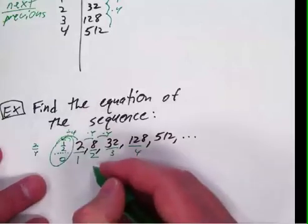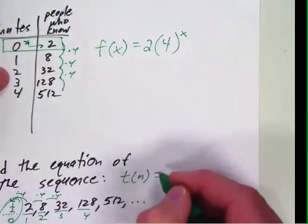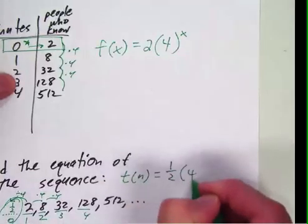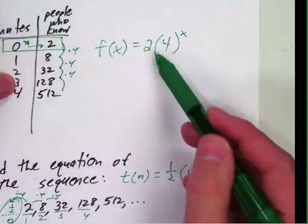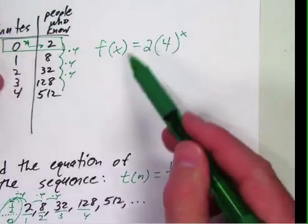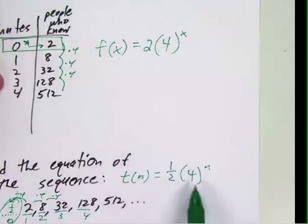This is a sequence, so we're going to be using t of n, so it's going to be t of n equals, and in this case we're going to use 1 half times 4 to the n. So you can look at both of these equations and notice that this is for the function. For a real life event, it actually is 2 times 4 to the x, whereas the sequence is 1 half times 4 to the n.